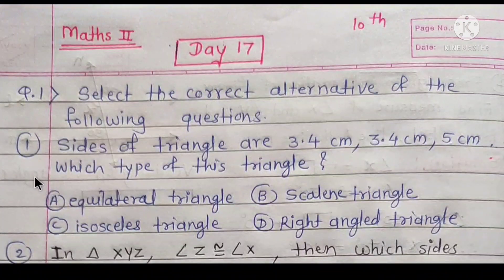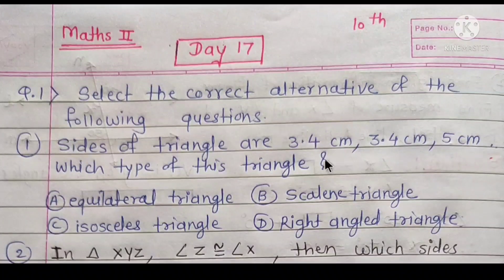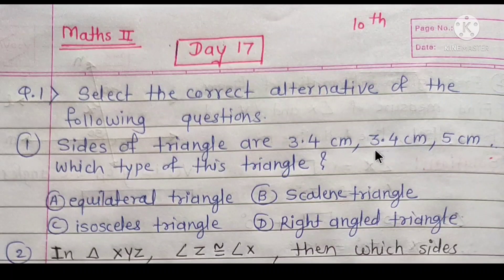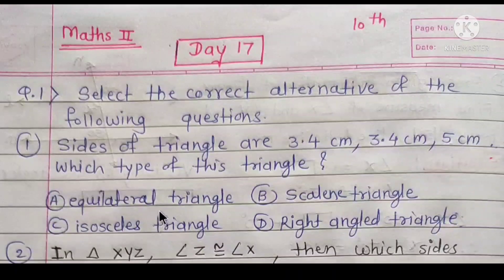The sides are 3.4 cm, 3.4 cm, and 5 cm — two sides are equal. Since two sides are equal, which type of triangle is this? It is an isosceles triangle.